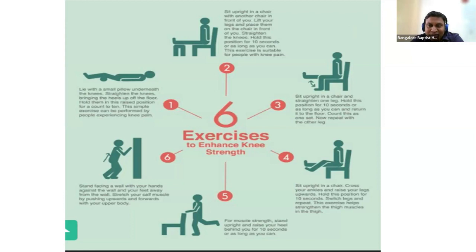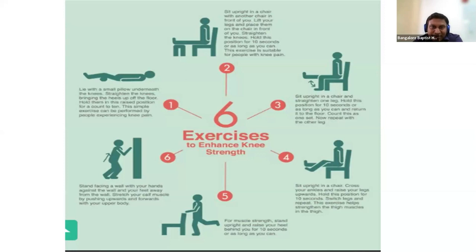Similarly, you can cross your knees and do the same thing sitting in a chair. For standing exercises, put your arms on a chair, lift your heel, and hold that position. Hold your leg at the knee for ten seconds, then bring back to normal position. You can also put your hands on the wall with feet away from the wall, stretch your calf muscles, move them upwards, then relax for ten seconds. These are basic exercises that can be done at home with just a chair and a stool.